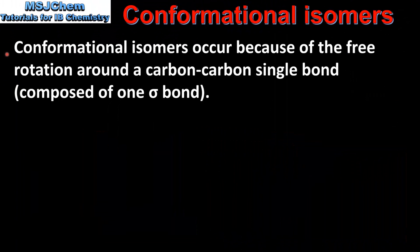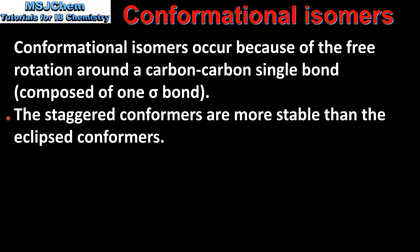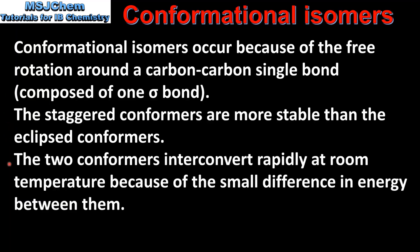In summary, conformational isomers occur because of the free rotation around a carbon-to-carbon single bond, which is composed of one sigma bond. The staggered conformers are more stable than the eclipsed conformers. The two conformers interconvert rapidly at room temperature because of the small difference in energy between them.